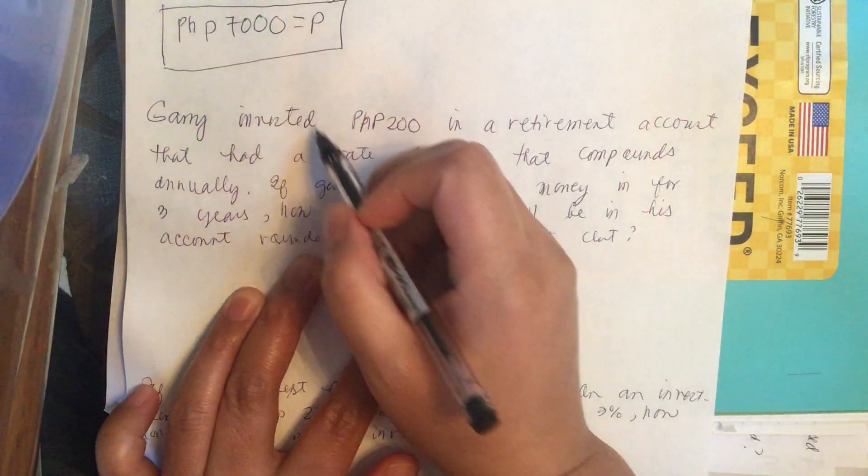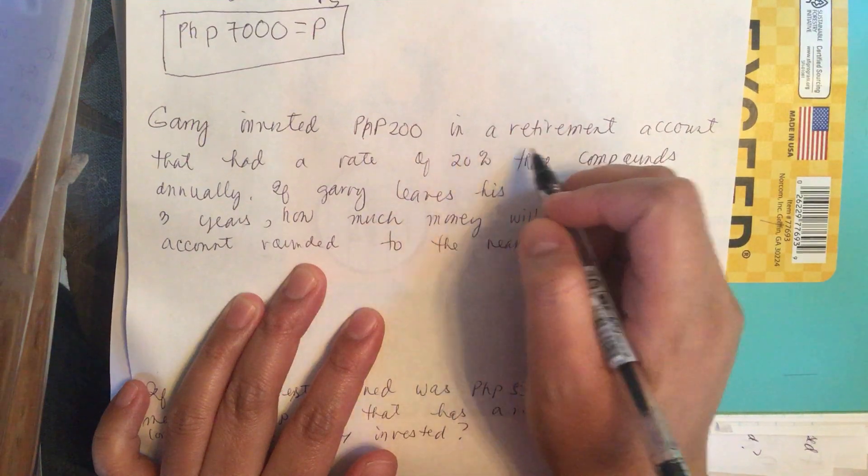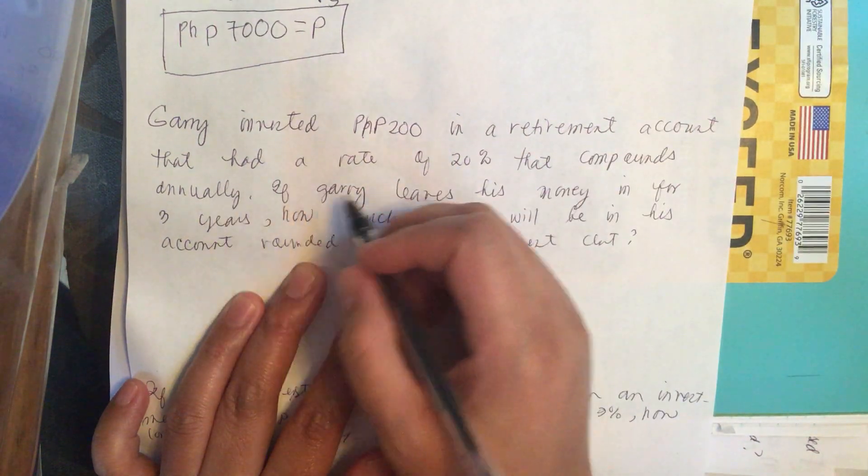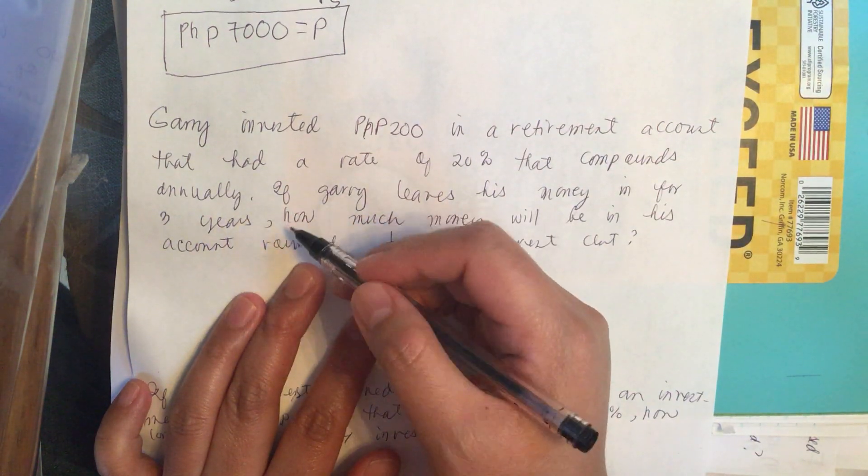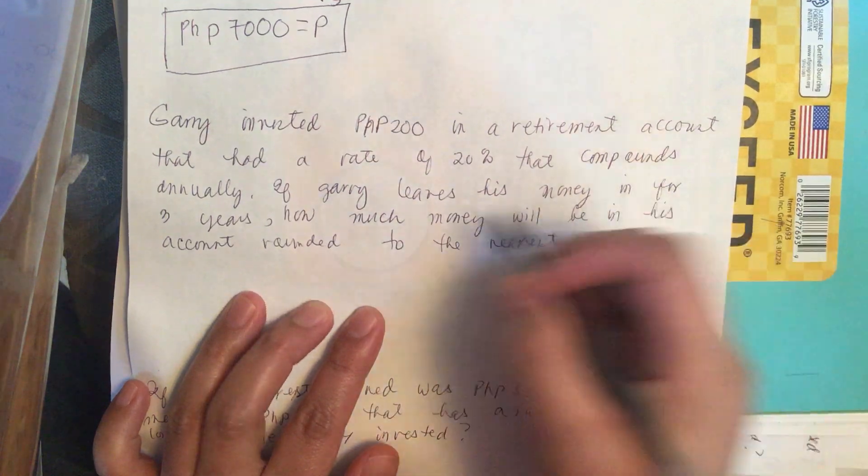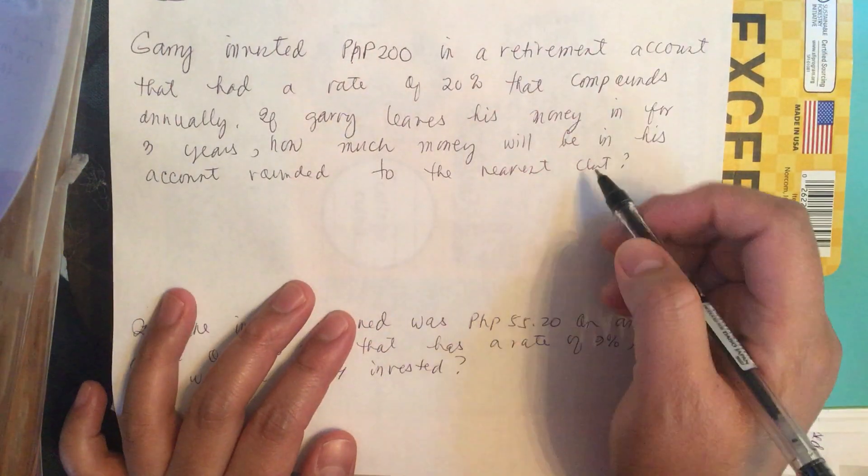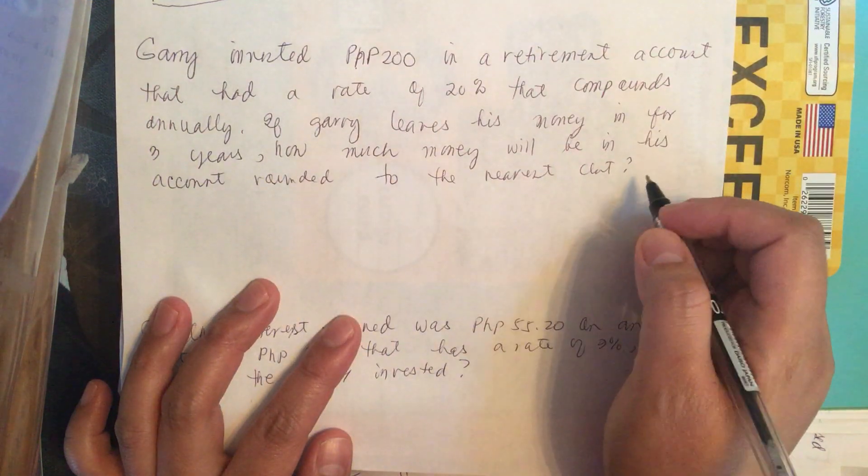Gary invested 200 pesos in a retirement account that had a rate of 20% that compounds annually. If Gary leaves his money in for 3 years, how much money will be in his account rounded to the nearest cent?